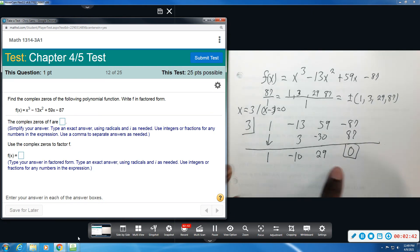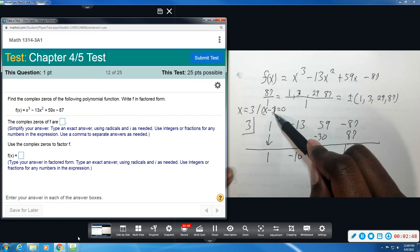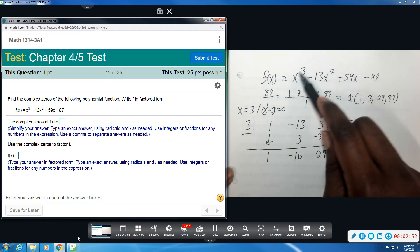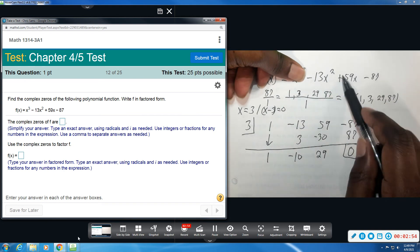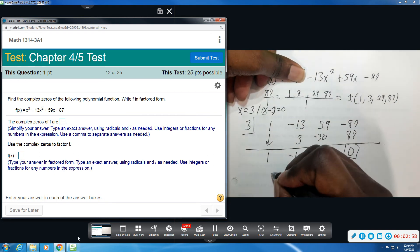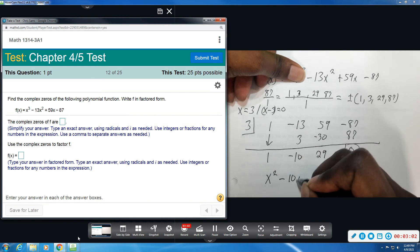These remaining values are the coefficients of my polynomial. So what happens, we're really dividing by x - 3. So I lose one of my degrees. I started out with x to the third. It is now dropping down to x to the second. So this 1 means 1x². And then that would be -10x. And then since that's positive, it would be +29.